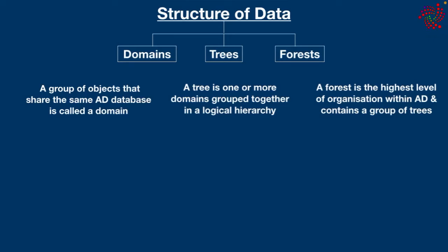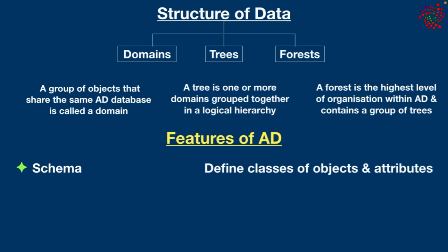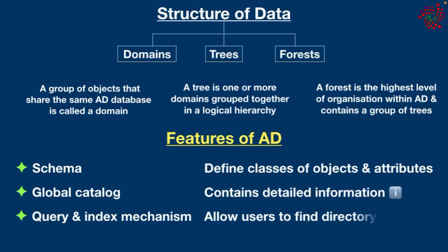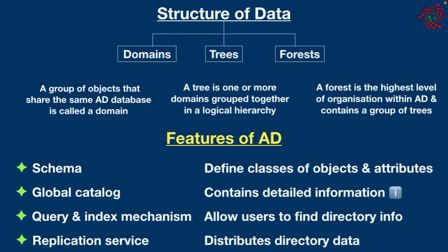Some important features of Active Directory include: Schema, which defines the classes of objects and attributes contained in the directory; Global Catalog, which contains detailed information about every object in the directory; Query and Index Mechanism, which allows users, administrators, and applications to efficiently find directory information; and Replication Service, which distributes directory data across the network.